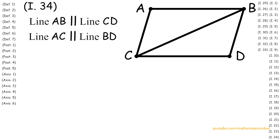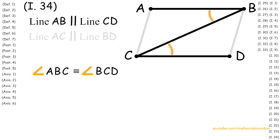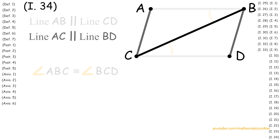Now notice that the parallel lines AB and CD are intersected by line BC. As a result, by Proposition 29, angle ABC is congruent to angle BCD. And since the parallel lines AC and BD are intersected by line CB, by Proposition 29, angle ACB is congruent to angle CBD.